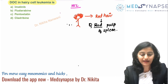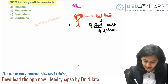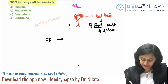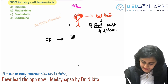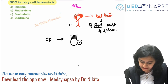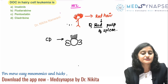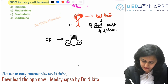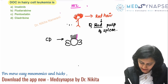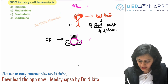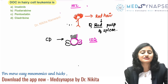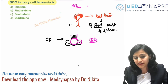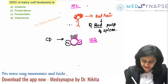This is a very important point to remember. The CD marker in hairy cell leukemia which is very specific — remember this as the hair, the face, and the ears of the person clad with hair. The CD marker is 103. CD103 is very very specific, though there are other CD markers like CD11c and CD25, but 103 is the most specific.